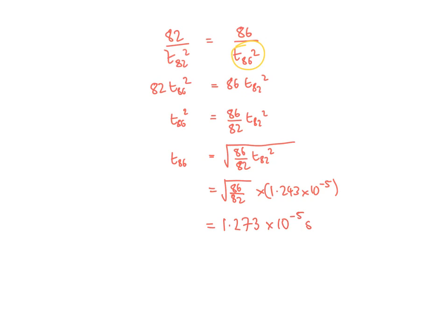That would have only been three marks in an exam question, because the mark scheme expects you to jump straight to the ratio expression. But I needed to explain how you arrive at that point, because it might not make sense from first principles when you just look at a mark scheme. Please ask if you have any queries, as there are a number of different types of time-of-flight questions.